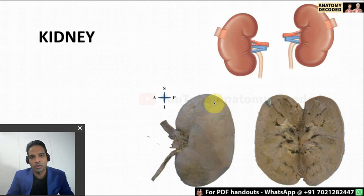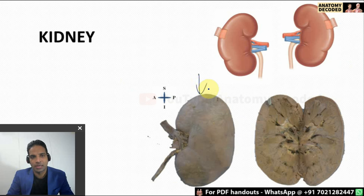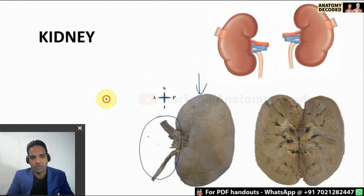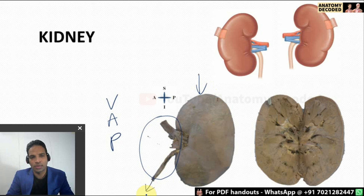Now let's cover the kidneys. Whenever a kidney specimen is given, you will be asked to identify the side and hold it in anatomical position. Just like we identify sides of bones by justifying in three dimensions, for the kidney — suppose this is the left kidney — hold it in the left hand such that the structures of the hilum from anterior to posterior are: vein, artery, and pelvis. The anterior-most structure should be the renal vein, then the renal artery, and the posterior-most is the renal pelvis, which continues as the ureter.